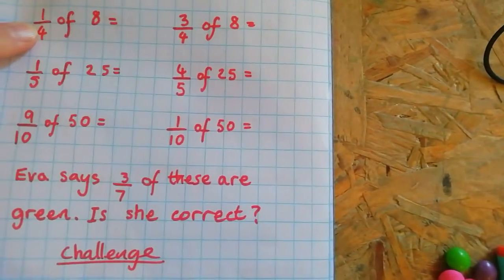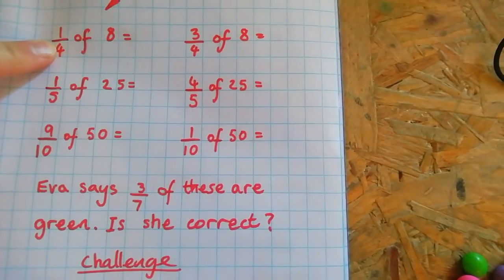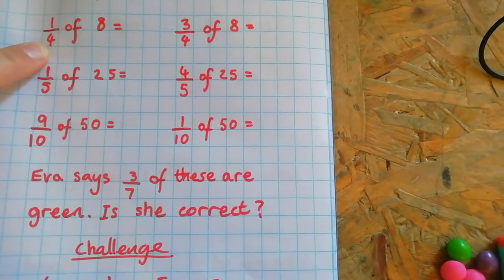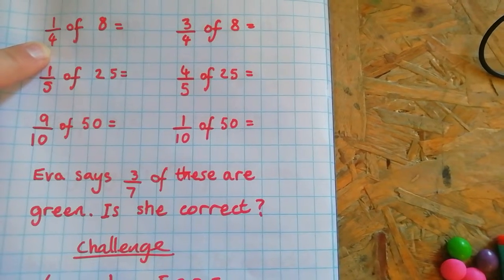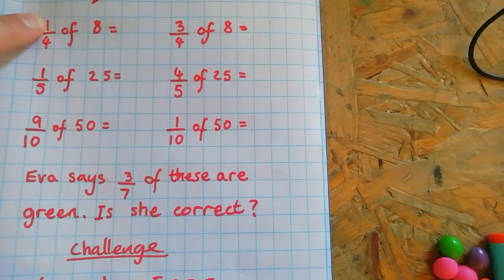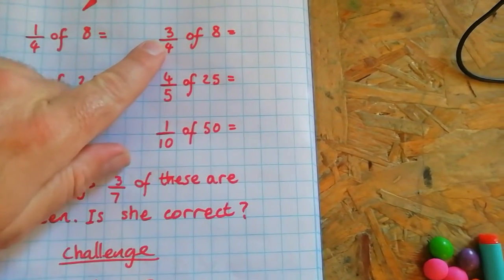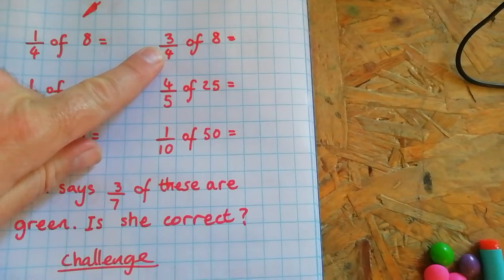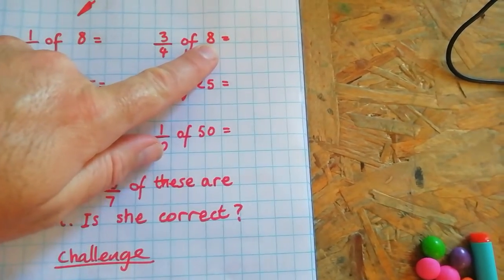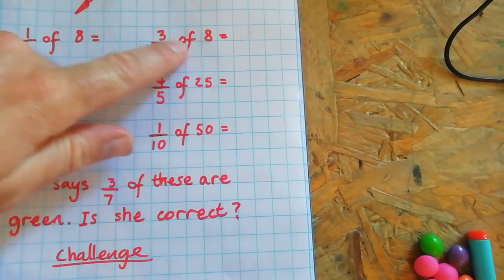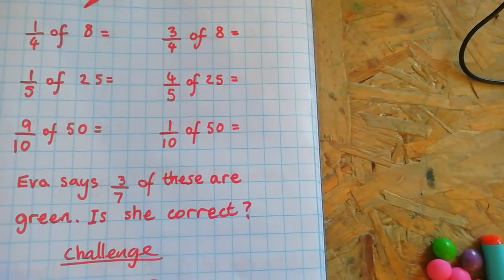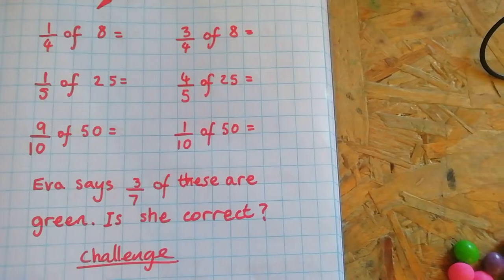So we do what we always do: we divide by the bottom and then times by the top. So eight divided by four - I can fit in two lots of them. Two, and then I times that by the top. Two times one is still going to be two. When I've got a non-unit fraction like three quarters, I still divide by the bottom - how many fours fit into eight? Two. And I take my answer and I multiply it by the top: three times two. Good luck with these ones here, pause the screen so you can do those.